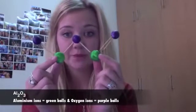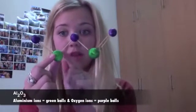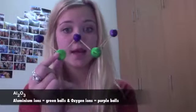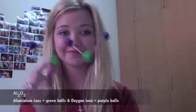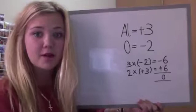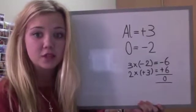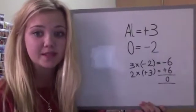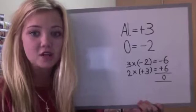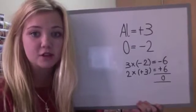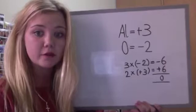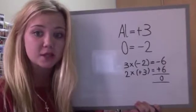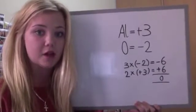Its structure formula can be represented like this, with the green balls representing aluminium ions and the purple balls representing oxygen ions. The reason there are three oxygen atoms and two aluminium atoms is not by random assignment. An oxygen ion has a charge of negative 2 while an aluminium ion has a charge of positive 3.